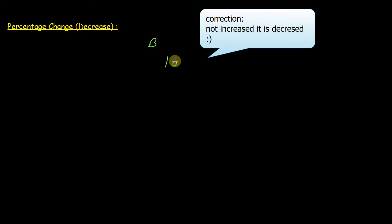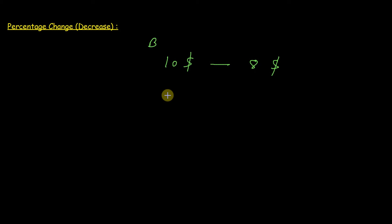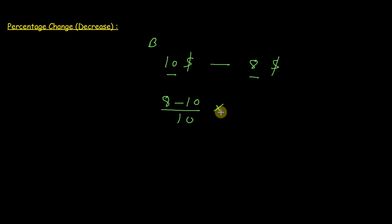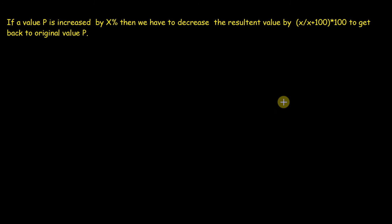Now suppose there is another person B whose daily income decreases from $10 to $8. Here the initial value is $10 and the final value is $8. So the percentage change would be: 8 minus 10, divided by 10, multiplied by 100 — after solving, this gives us minus 20%. Here the minus sign denotes the decrease. That's how we calculate the decrease percentage change.